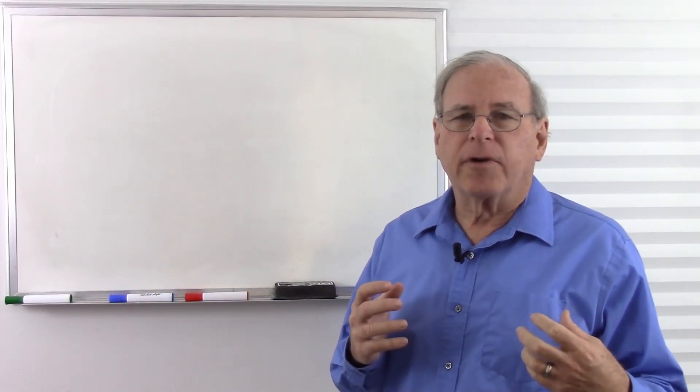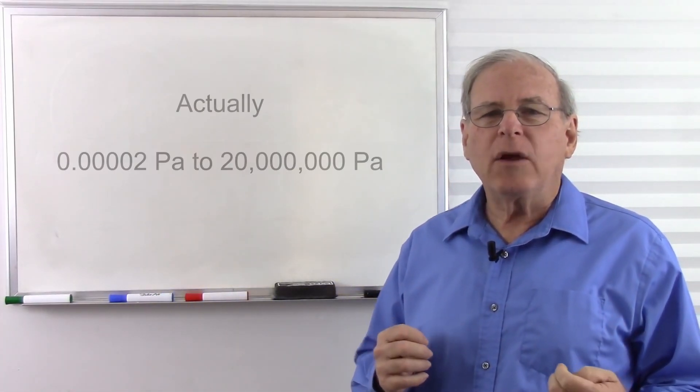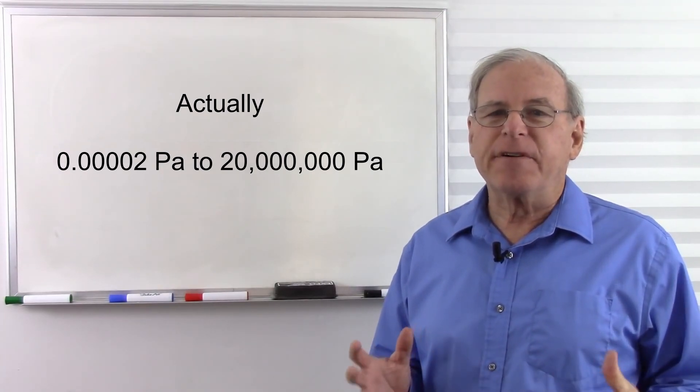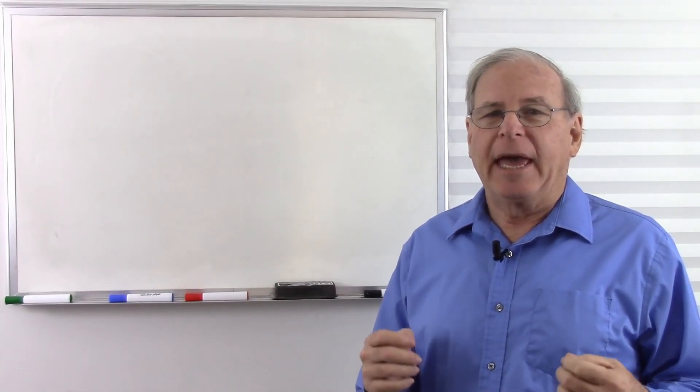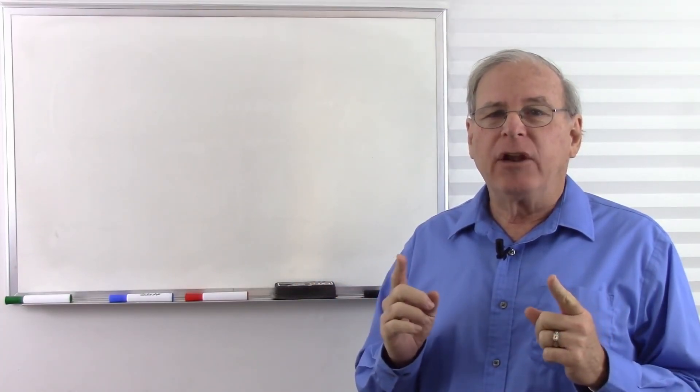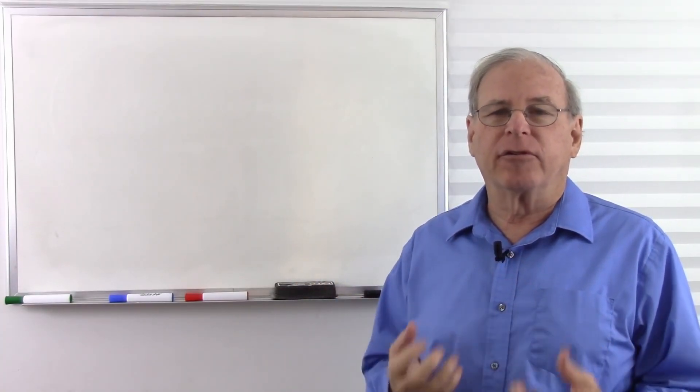So our ears being sensitive to 20 micropascals of pressure is very, very sensitive. On the other hand, the amount of sound pressure that will cause pain, or the threshold of pain, is one trillion times that pressure. So our ears are sensitive to sounds ranging from a pressure of 20 millionths of a pascal to about 100 million pascals. This is a very wide range to deal with, and using decibels squeezes this wide range of numbers into a smaller set of numbers that are easier to deal with.